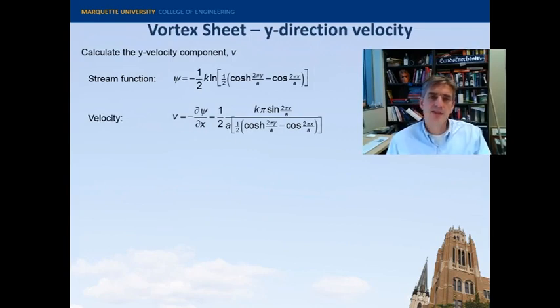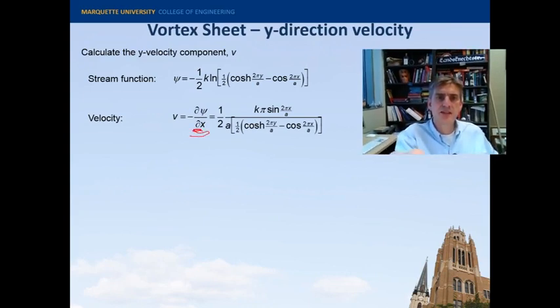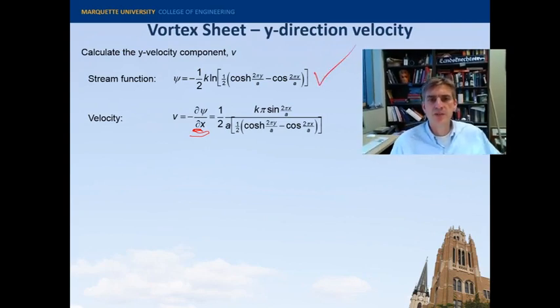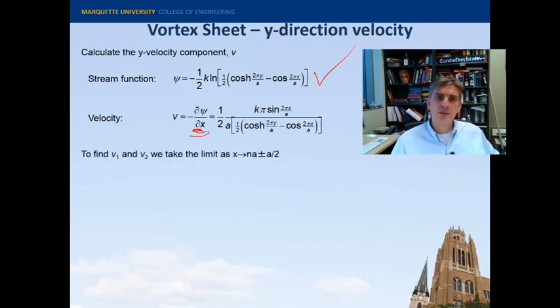Let's calculate the scalar component of the y velocity. So again, we are just going to take the derivative with respect to x of psi, the stream function, and I just rewrote it here so you can see it. And when I do that, I get this sine over hyperbolic sine minus cosine function. And we take the limit as x goes to infinity.